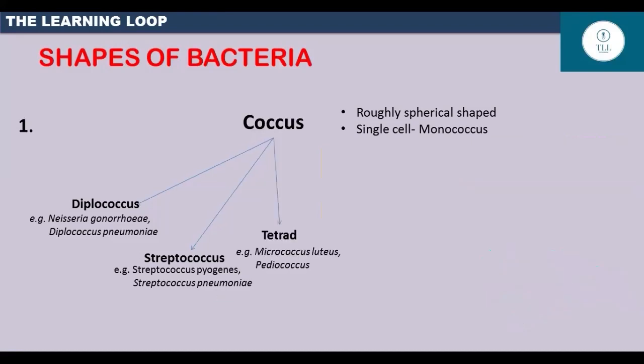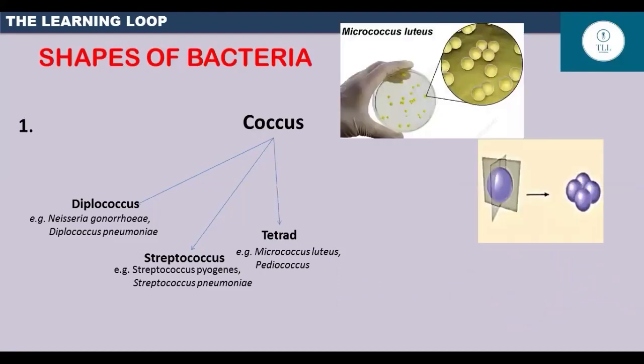Then the third type of coccus is tetrad. Here, a single cell divides into two planes such that cells are arranged in a group of four. For example, micrococcus luteus.